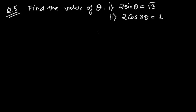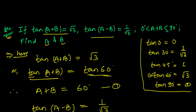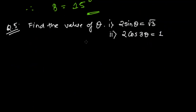Hello friends, welcome once again. We have another problem, just like the one we recently finished — it's exactly the same, a little bit different. It is saying: find the value of theta if 2 sin theta equals root 3, and 2 cos 3 theta equals 1. This is another problem, so let me do this one first.